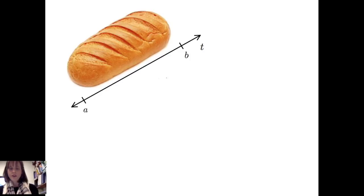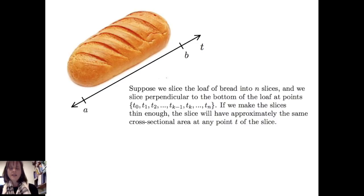To do that, we'll first set up an axis alongside the loaf of bread. Suppose we have the length of the bread going between a and b. We'll slice the loaf of bread into n slices. If we slice perpendicular to the bottom of the loaf, we'll have our cutting points: t sub 0, t sub 1, t sub 2, up through t sub k, and continuing up to t sub n.